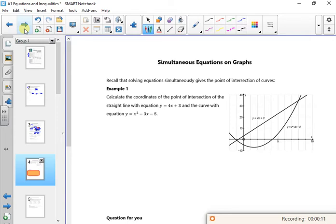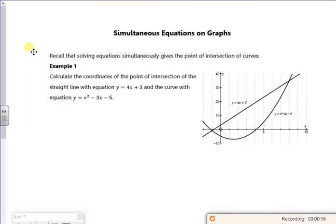So it says, from school you sub one into the other and then you solve it. So we're going to do that, we're going to sub this into the equation, so we're going to put it there. So we're going to have 4x plus 3 is x squared minus 3x minus 5. So that's straight from school, just put them equal to each other, and then rearrange it.